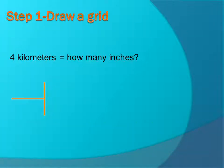The first step you want to do is draw a grid. So if we want to know 4 kilometers equals how many inches, this is the first step in solving that problem. So we draw a grid, something like this. You may not draw it all the way because you may not know how many steps you need to take to get from one unit to the next, and that's okay. So you can always just add on more as you go.